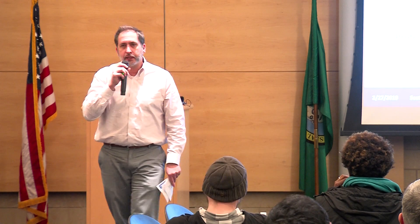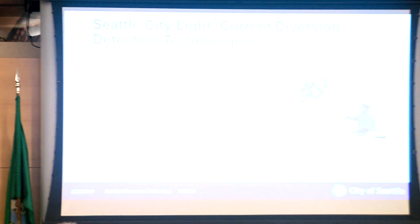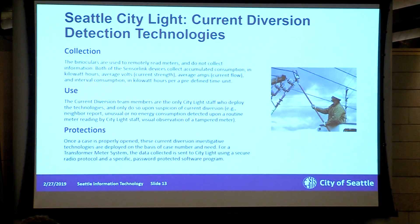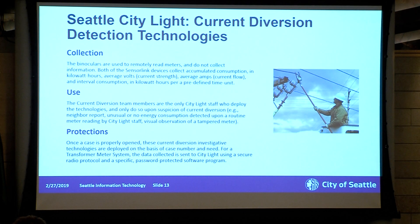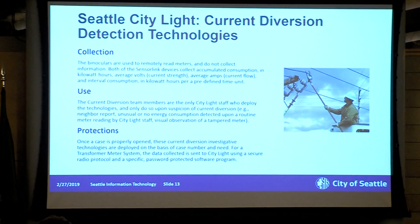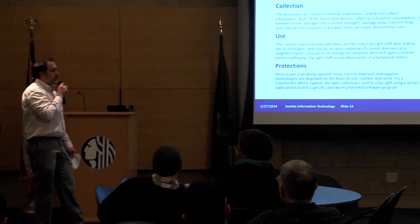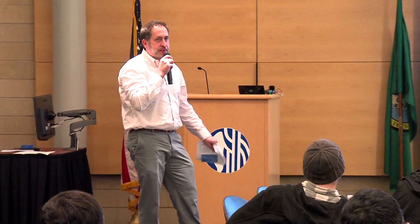Last year we recovered $1.6 million through our current diversion process — a value-added effort important to rate payers. We collect the information, build the case, use it to preserve the integrity of our equipment, and it helps with our investigations. These three technologies are used by our meter electricians to preserve the distribution system and ensure we're billing customers accurately for the power they use.